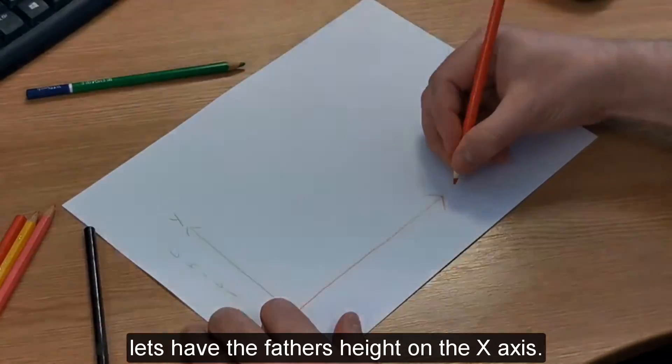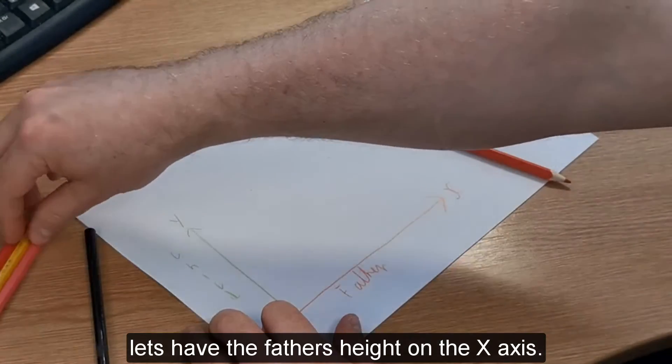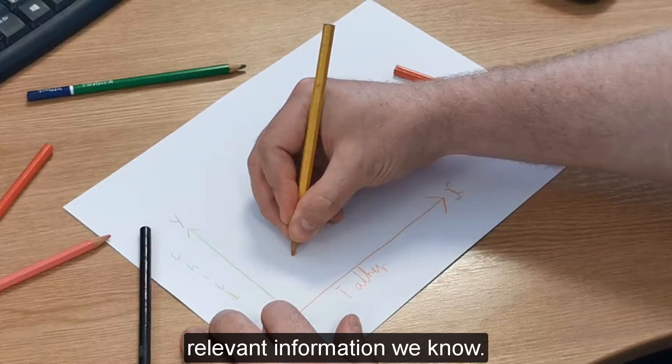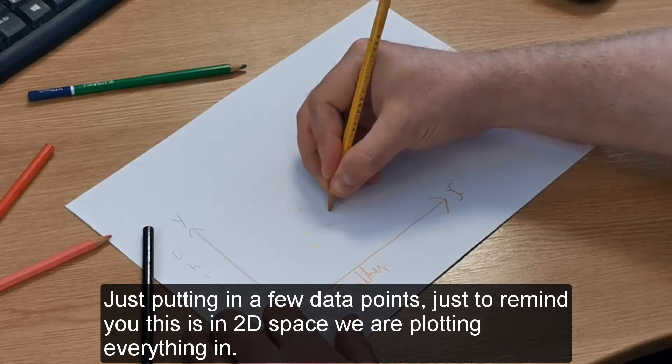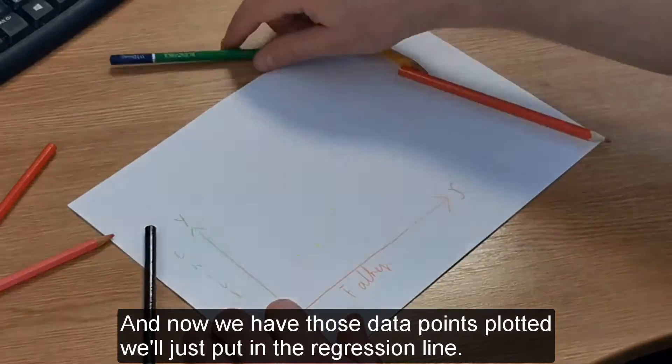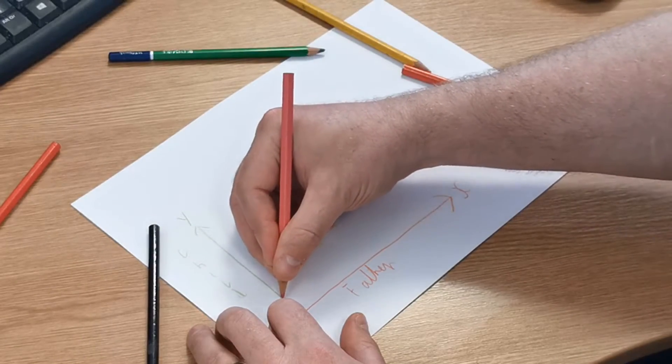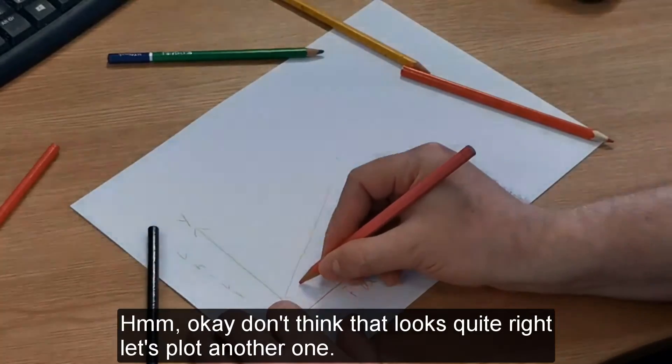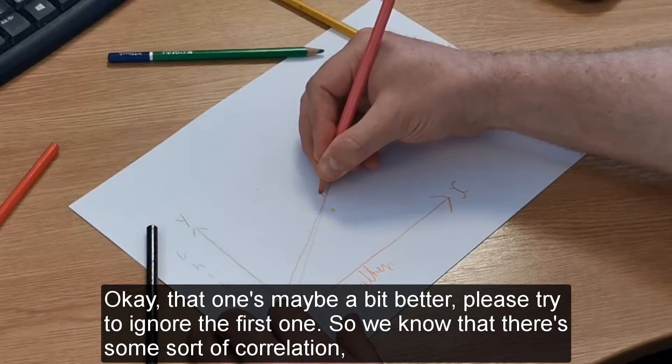Let's add father's height on the x-axis. Just putting in a few data points, just to remind you this is in 2D space we are plotting everything in. Now that we've got those data points plotted, we'll put in the regression line. Okay, that one's maybe a bit better. Please try to ignore the first one.